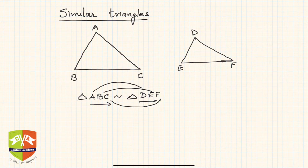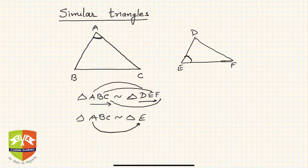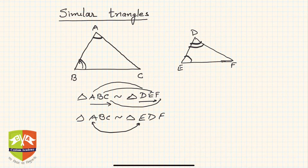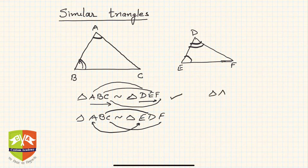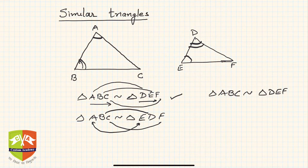The order changes only when the corresponding angles change. For example, if angle A equals angle E, then you would write triangle ABC is similar to triangle EDF — because A corresponds to E first. If B corresponds to D and C corresponds to F, you write accordingly. Diagrams can be deceptive, so when solving problems, make sure corresponding angles are the same and written in the same order.